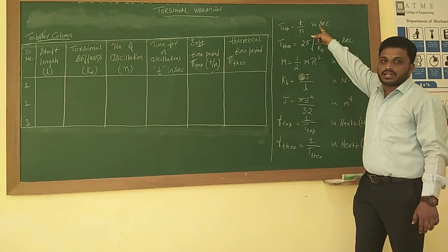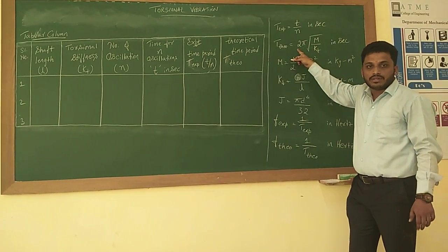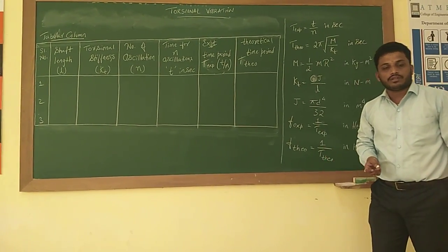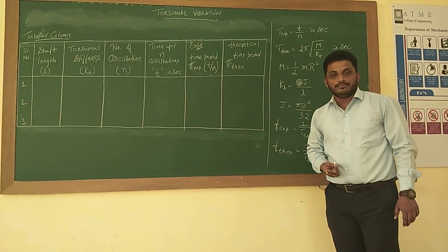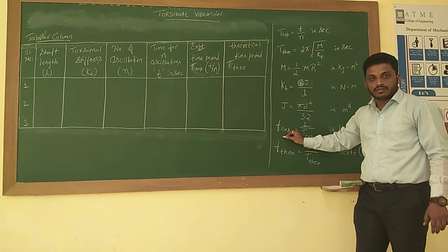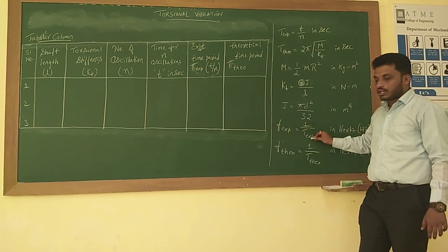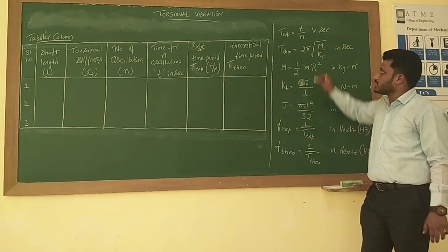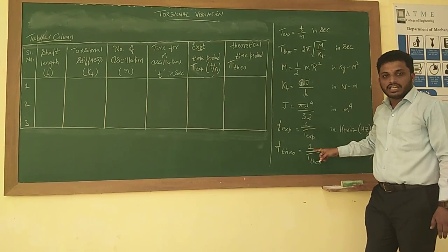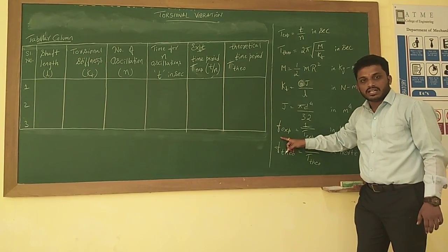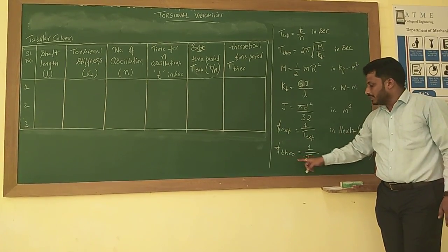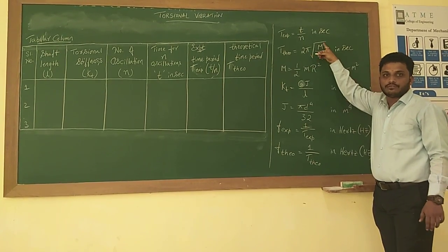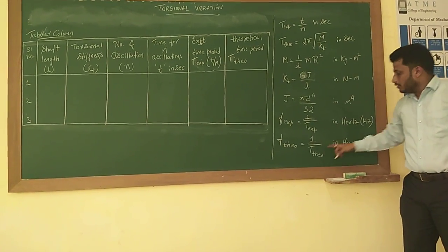We calculate both the experimental and theoretical time periods. Next, we find the natural frequency of the shaft. The natural frequency is the reciprocal of the time period. The experimental natural frequency is 1 divided by T_experimental. Similarly, the theoretical natural frequency is 1 divided by T_theoretical, expressed in hertz.